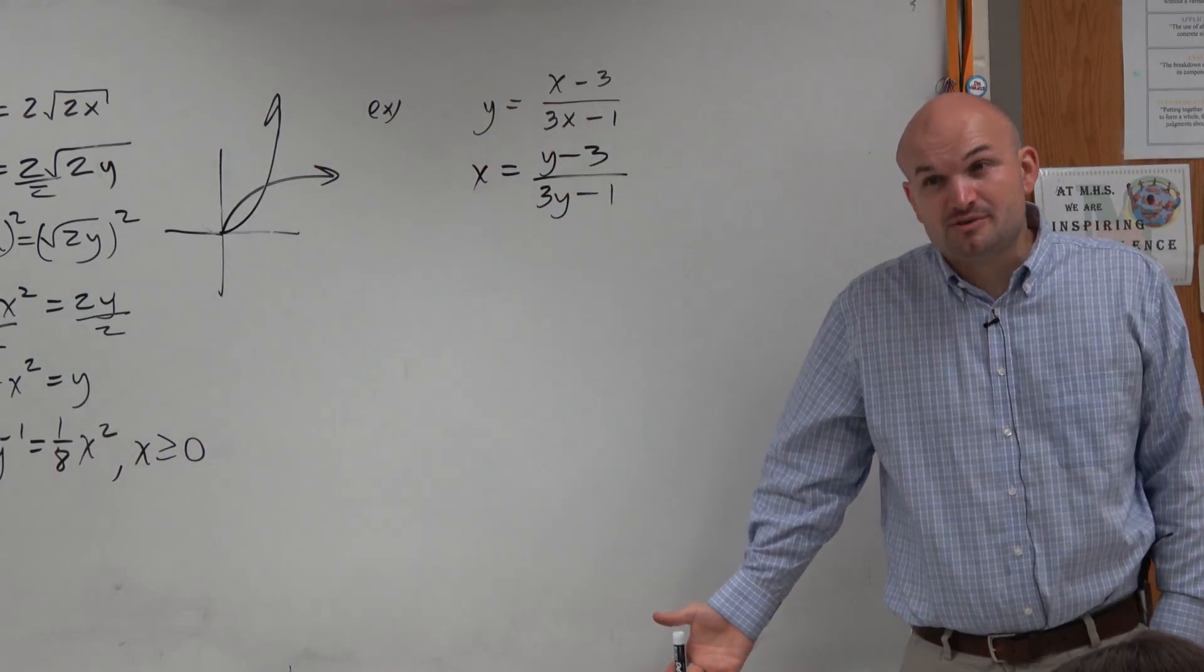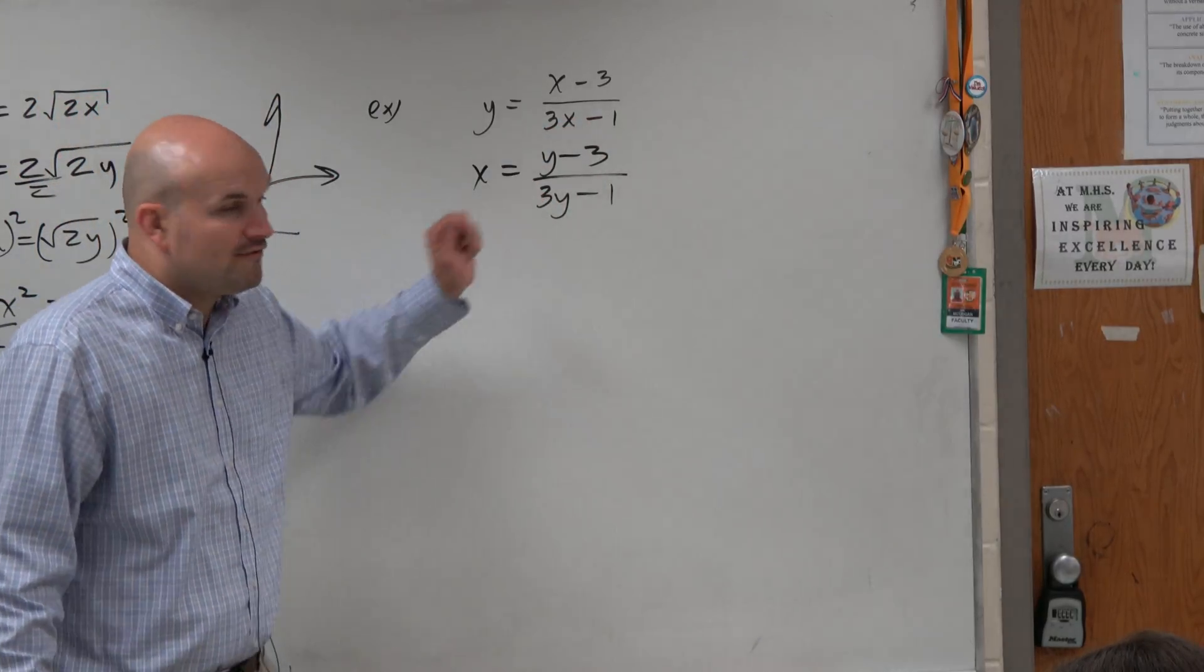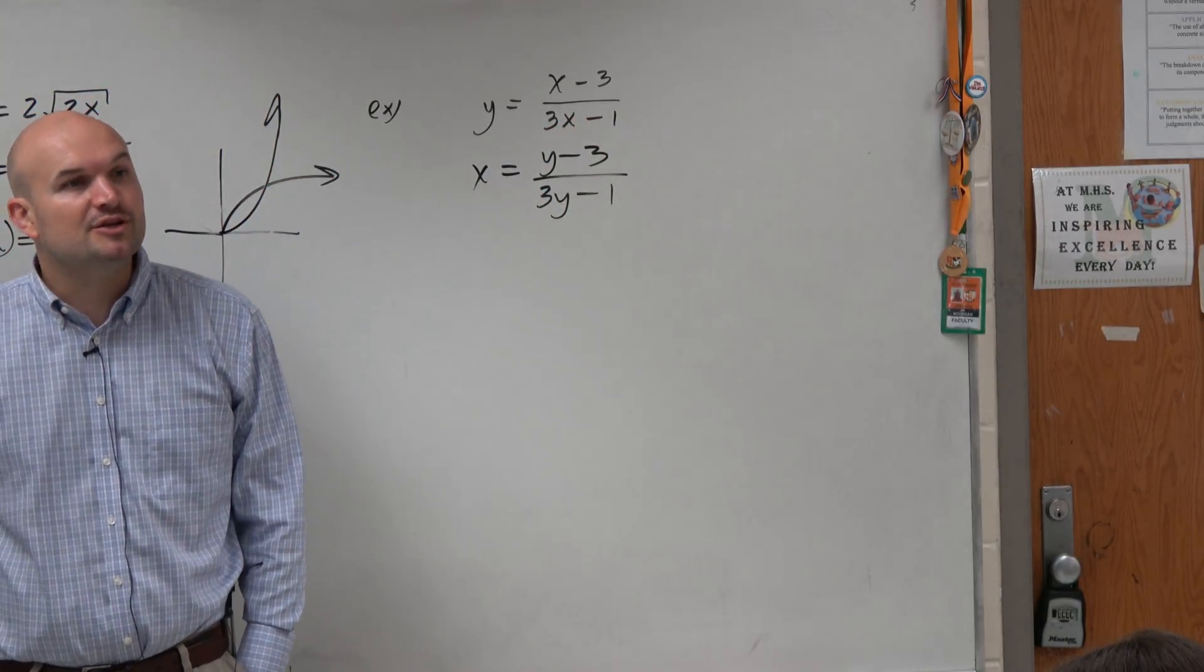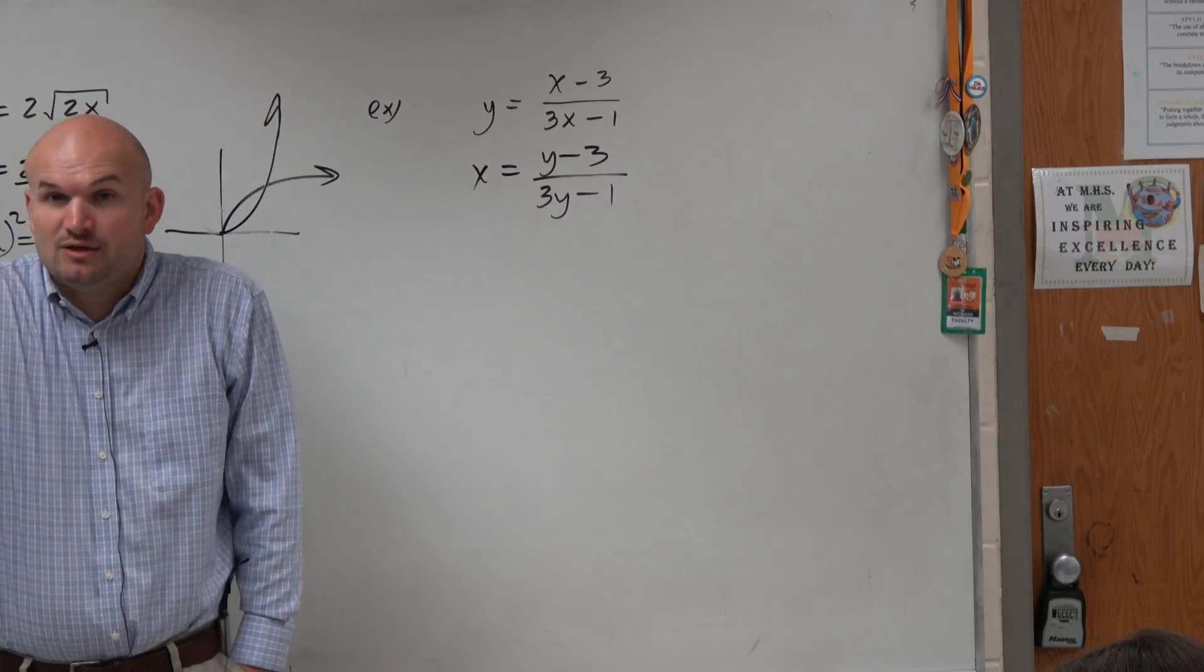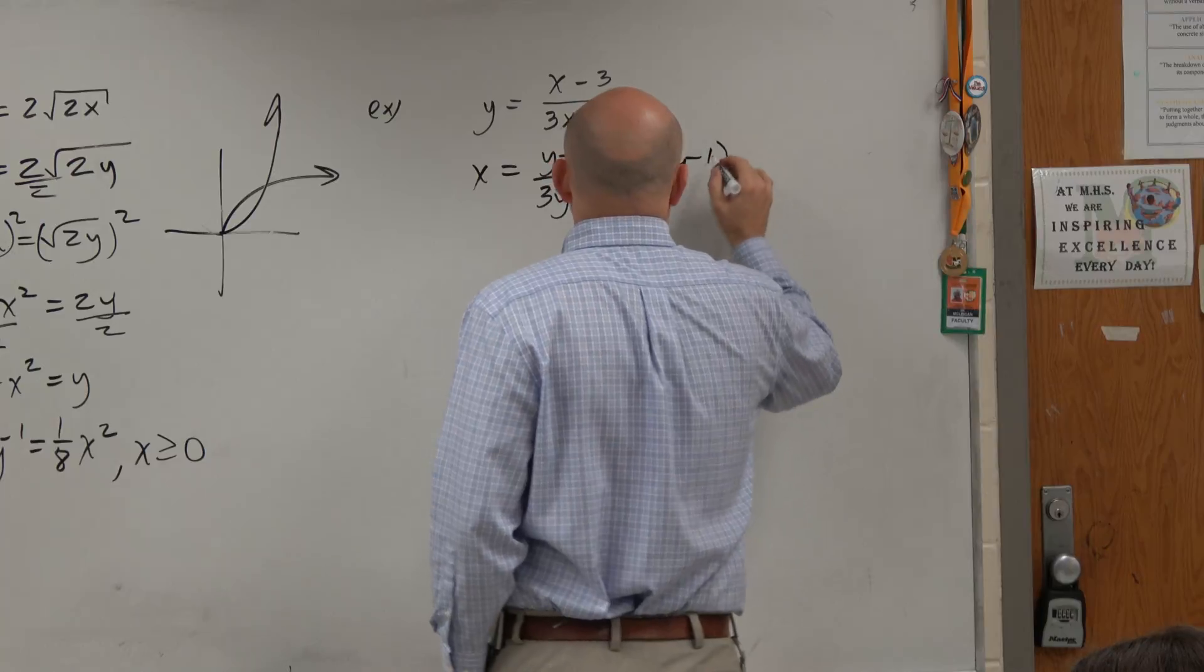This problem gets students because they forgot the algebra. That's really it. How do you solve for y when you have multiple y's, one in the numerator and one in the denominator? You've got to get the y off the denominator first. So multiply by what's in the denominator on both sides.